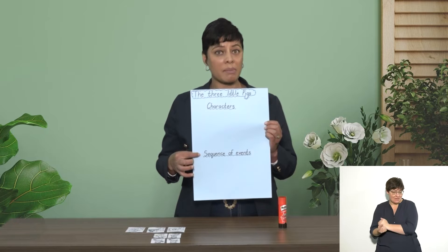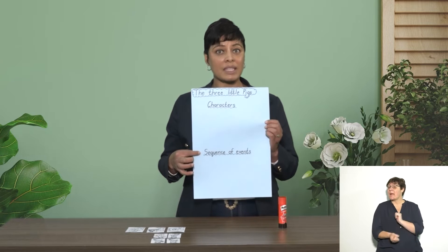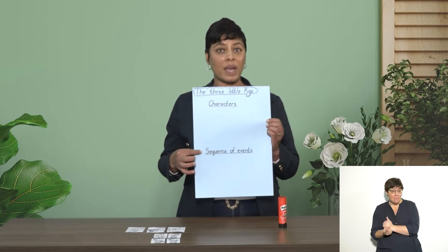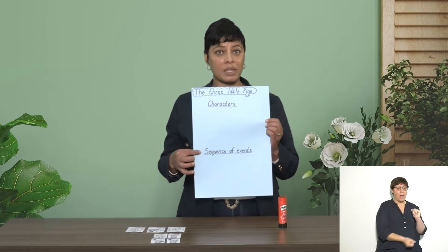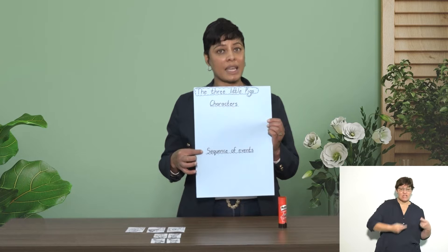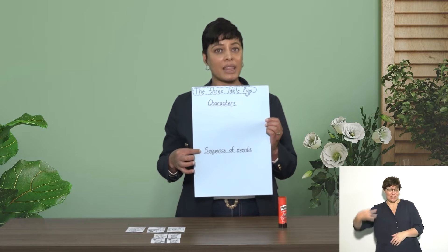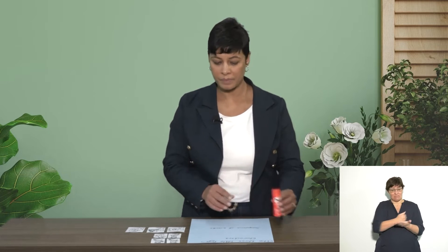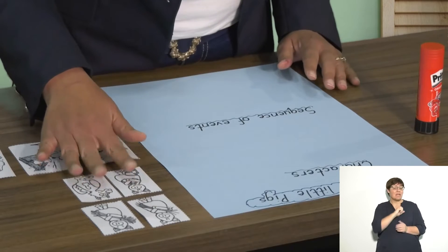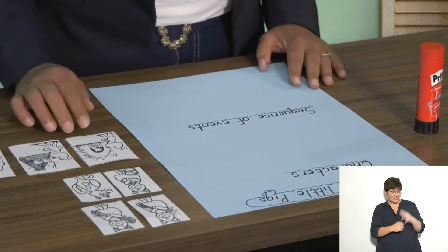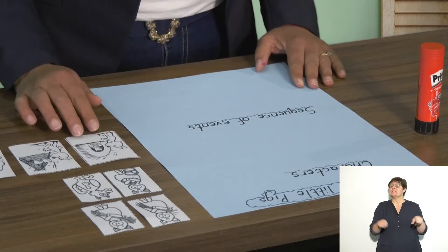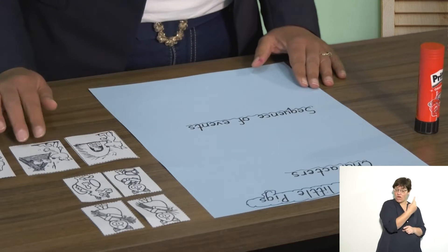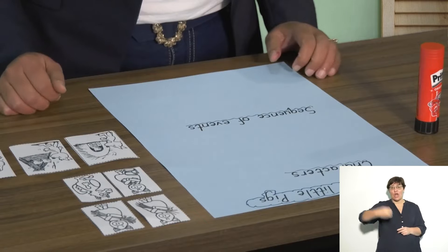Remember, sequence of events is the way things happened — what came first, second and third in the story. You will also need some print, some pictures of the characters, and also what happened first, second and third.